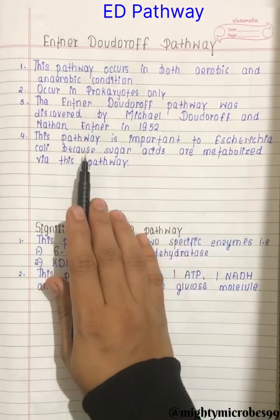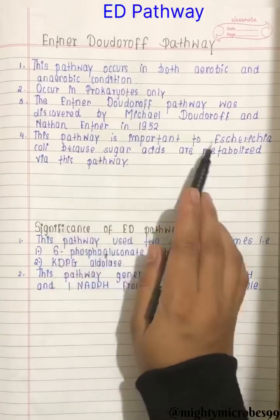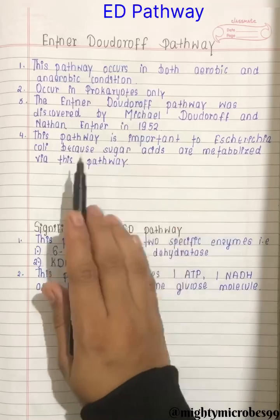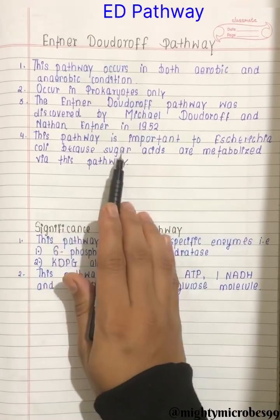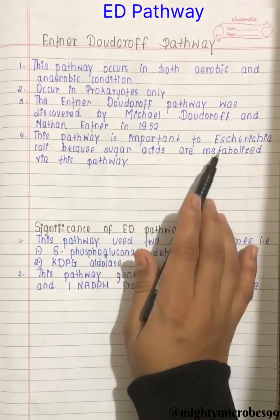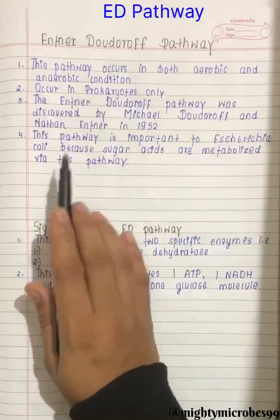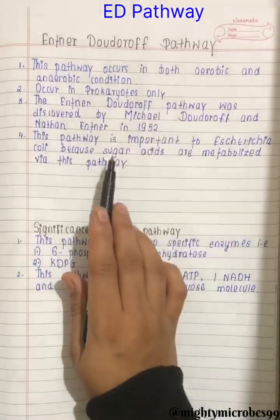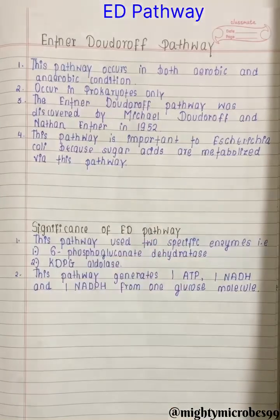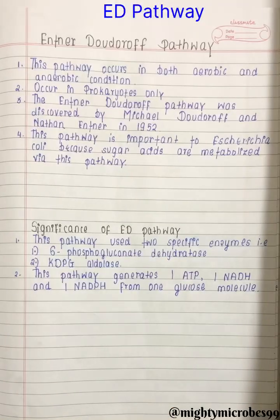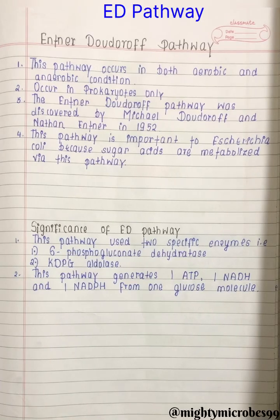This pathway is important to E. coli because sugar acids are metabolized by this ED pathway. Moreover, this pathway is generally found in Pseudomonas, Rhizobium, Acetobacter, Agrobacterium, and very few other gram-negative genera.